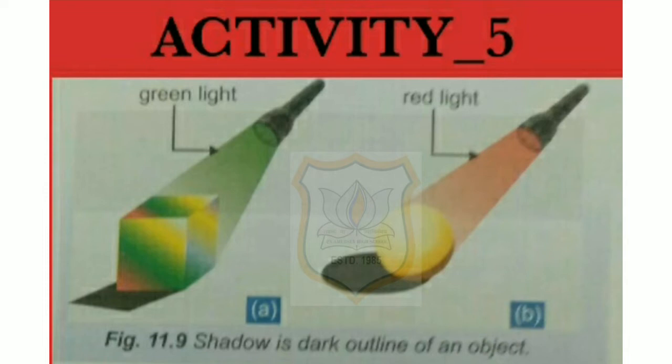Method: Take a torch and cover the front of it with a piece of green colored cellophane. The torch now emits green colored light. Place a multicolored cube on the table, as seen in Figure A. Shine the torch on the multicolored cube. The shadow is dark.